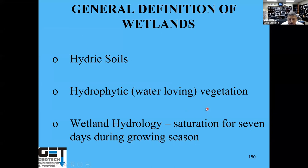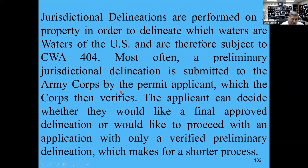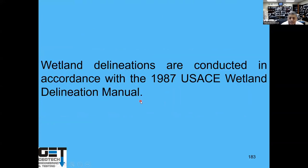So: hydric soils, water-loving vegetation, and wetland hydrology — saturation for seven days during the growing season. You've got to meet all three criteria to have wetlands. If you want to determine whether water on that site is jurisdictional, you've got to get with the Corps of Engineers and fill out the short form Clean Water Act Section 404. You really need a wetland consultant to help you with that. Wetland delineations are conducted in accordance with the 1987 U.S. Army Corps of Engineers Wetland Delineation Manual.